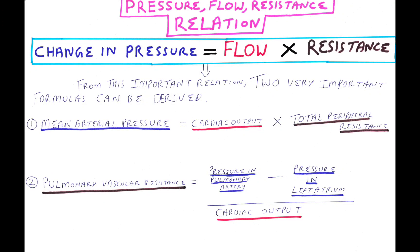Pressure flow resistance relation: change in pressure equals flow times resistance. From this important relation, two very important formulas can be derived. Number one, mean arterial pressure, that is change in pressure, equals cardiac output, which is flow, times total peripheral resistance.